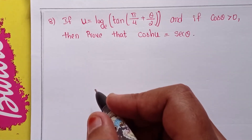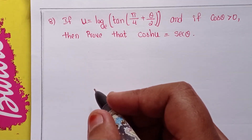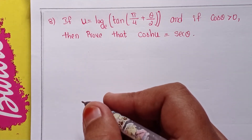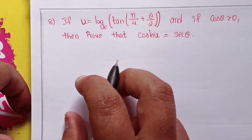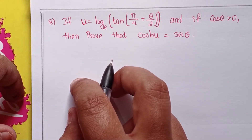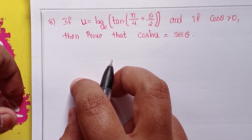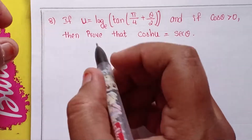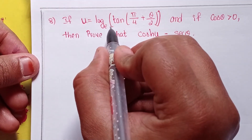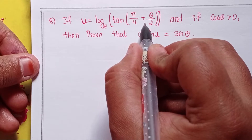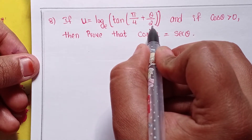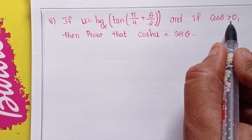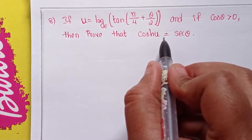Hi guys, this is Shahin and welcome to my channel. Today we will discuss Intermediate First Year 1A, Chapter 9, Hyperbolic Functions, Exercise 9A, 8th problem — the last one. If u equals log of tan of (π/4 + θ/2) base e, and if cos θ is greater than 0, then prove that cosh u equals sec θ.